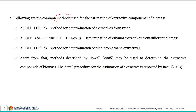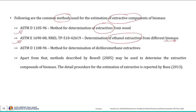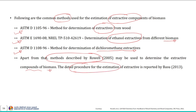The following are common methods used for estimation of extractive components of biomass: one ASTM method for determination of extractives from wood; an ASTM and NREL protocol for estimation of ethanol extractives from different biomass samples; an ASTM method for determination of dichloromethane extractives; and the method described by Rowell for determining extractive compounds of biomass, with detailed procedures available in the reference.